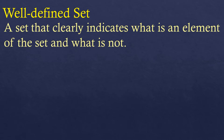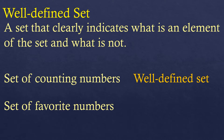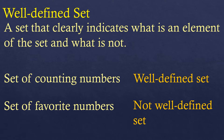Now let's move to one of our main topics: the well-defined set. A well-defined set is a set that clearly indicates what is an element of the set and what is not. For example, the set of counting numbers is a well-defined set because you will know what the members are — it's only the counting numbers: 1, 2, 3, 4, 5, and so on. A non-well-defined set would be a set of favorite numbers, because every person has different favorite numbers, so we will have different sets of favorite numbers.